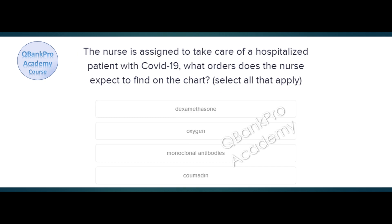The nurse is assigned to take care of a hospitalized patient with COVID-19. What orders does the nurse expect to find on the chart? Dexamethasone, oxygen, monoclonal antibodies, Coumadin. The correct answer is dexamethasone, oxygen, and monoclonal antibodies.